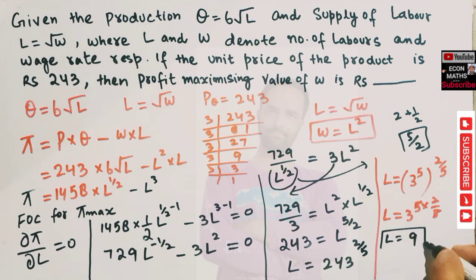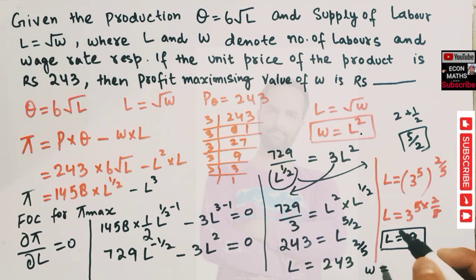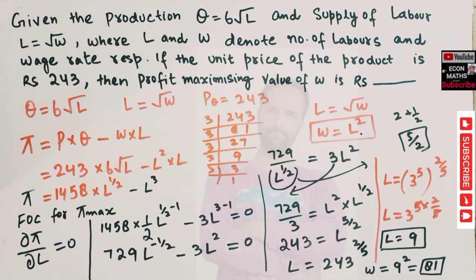Now plugging L = 9 back to find the wage rate: w = L² = 9² = 81. So the profit-maximizing wage rate is rupees 81. I hope I made myself clear — please share your valuable feedback. Thank you.